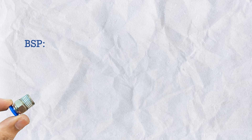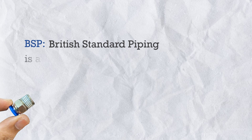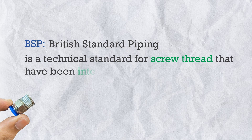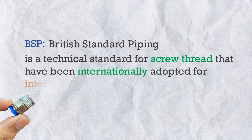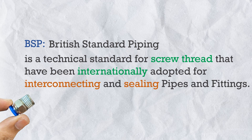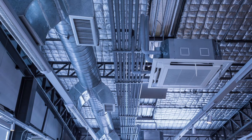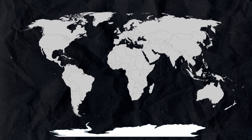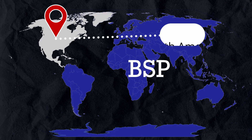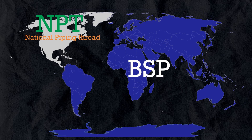BSP — British Standard Pipe — is a technical standard for screw threads that has been internationally adopted for interlocking and sealing piping and fittings, for example in pneumatics, hydraulics, HVAC, and the gas industry. Anywhere related to piping in the world, BSP standard is used, except in North America where they use NPT (National Pipe Thread) standard. But in this video let's focus only on BSP thread.